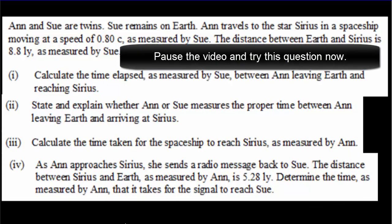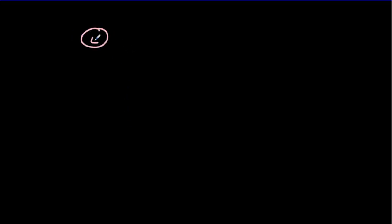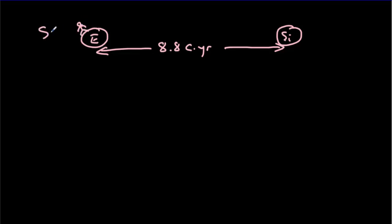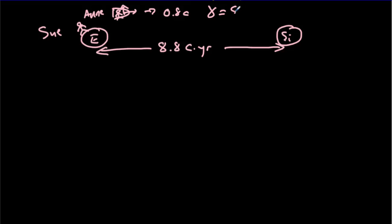Let's try to do a typical IB point-length problem. Our situation is as such: we have the Earth and Sirius not moving relative to one another, with a fixed distance of 8.8 light years between the two. We've got Sue — she is our length observer, she's in the length frame. And we've got Ann, who is part of the point frame, and that point frame is moving at 0.8c. When we have a relative speed of 0.8c, gamma comes out to be 5/3.